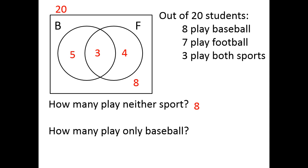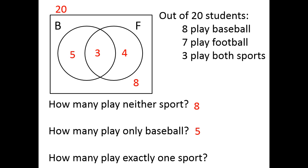How many people play only baseball? That means inside the baseball circle but not inside the football circle — that's 5 people. How many play exactly one sport? That's either baseball only or football only: 5 people who only play baseball plus 4 people who only play football equals 9 people.